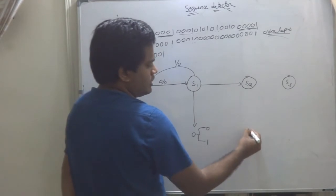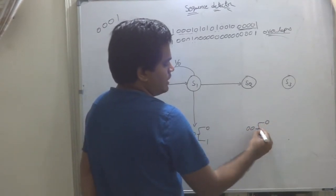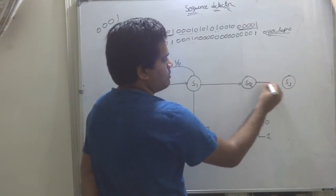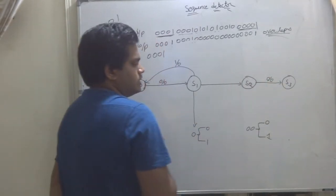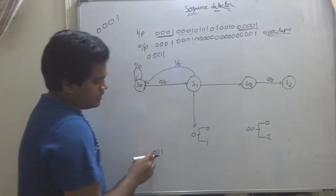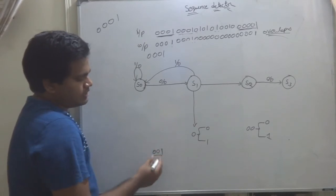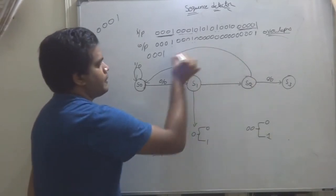In S2 state, what is that? 00 detector state. If 0 comes, where it will go? 1 comes, 0 comes, automatically I am telling you, it will go here. If 1 comes, 1 comes means, your 001 is received now. If 001 is received, total sequence itself is wrong. If you go to S0 only.